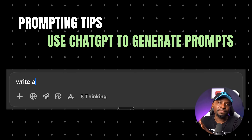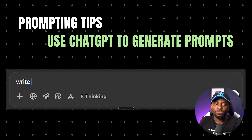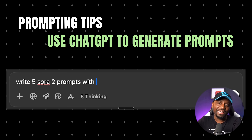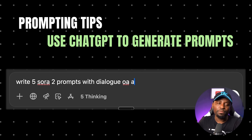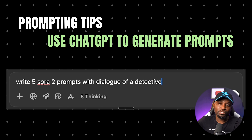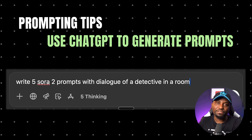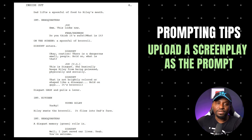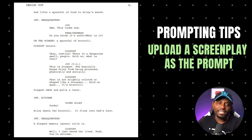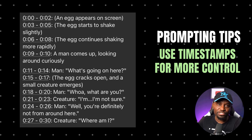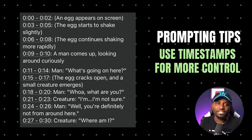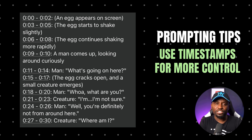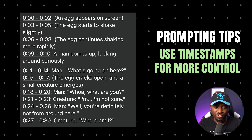A quick pro tip: I typically use ChatGPT to help me format the prompt. You can just tell ChatGPT what the scene is supposed to be and ask it to generate a Sora 2 prompt — most of the time it helps you significantly. I've also seen people uploading a screenplay to it, where it takes the camera movement, the mood of the scene, and also the dialogue. Some people are also doing time-bound prompts with timestamps of what should be happening minute by minute, and getting quite good results.